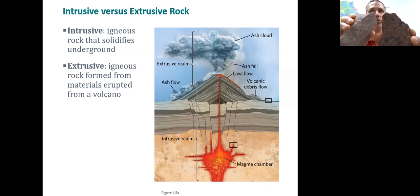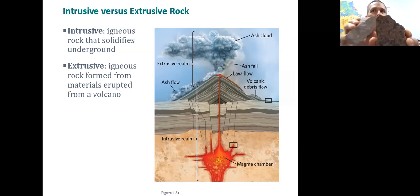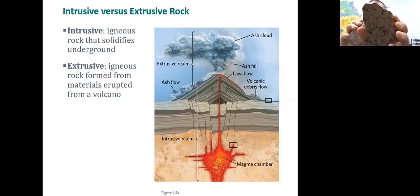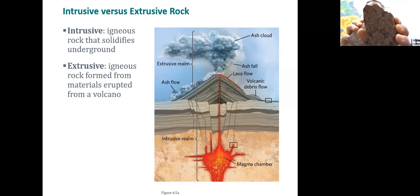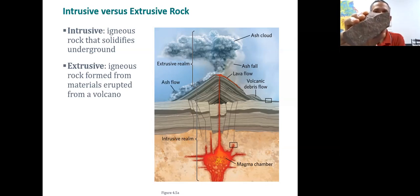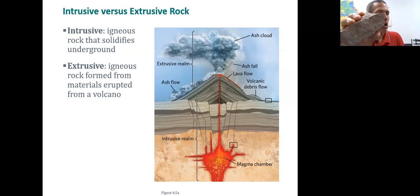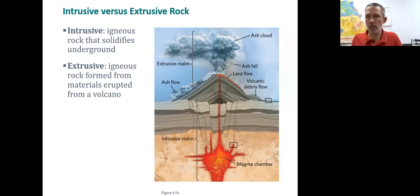Some terms to know: intrusive rocks cool in the ground and we can see their crystals — we call this a phaneritic texture. Extrusive rocks exit the earth and tend to have finer crystals. For rocks that cooled quickly, you need a microscope to see the individual minerals — these are called aphanitic texture or fine-grained texture.